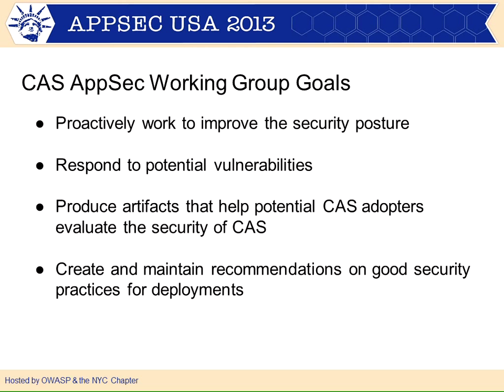These were the goals we came up with — our charter for the AppSec Working Group. We wanted to proactively improve the security posture of CAS, not just wait around for vulnerability reports or incidents. We wanted to be able to respond to potential vulnerabilities. We wanted to produce artifacts to allow potential adopters to evaluate the security of CAS so we could answer the question: is it secure? We actually have done some work, and here are artifacts that you can use to prove to yourself whether it's secure or not. And then we wanted to maintain and create recommendations on deployment practices — because the software may be secure by default, but the deployment may not. Maybe you made bad decisions, so we wanted recommendations on how to harden the deployment.